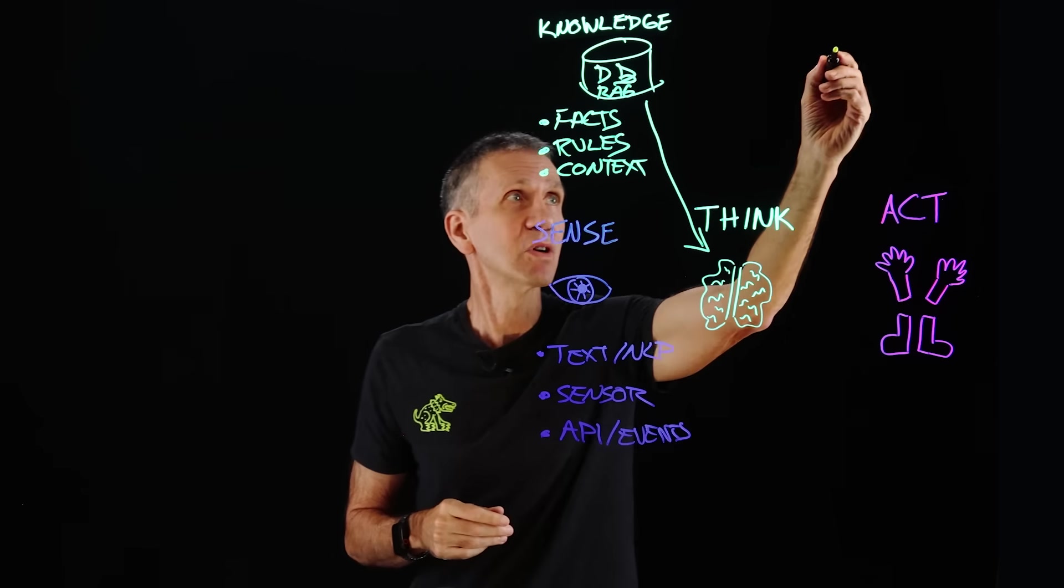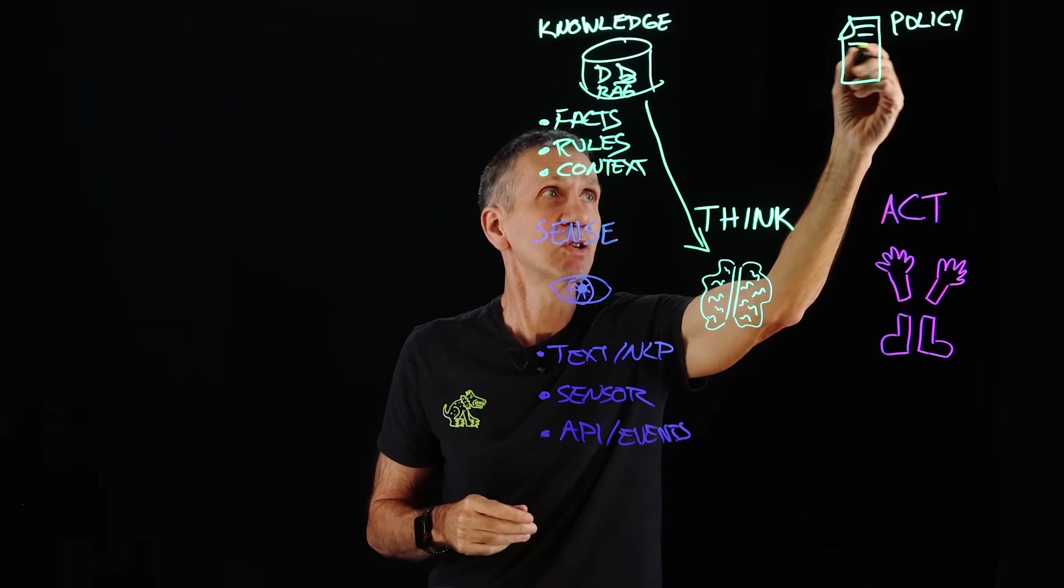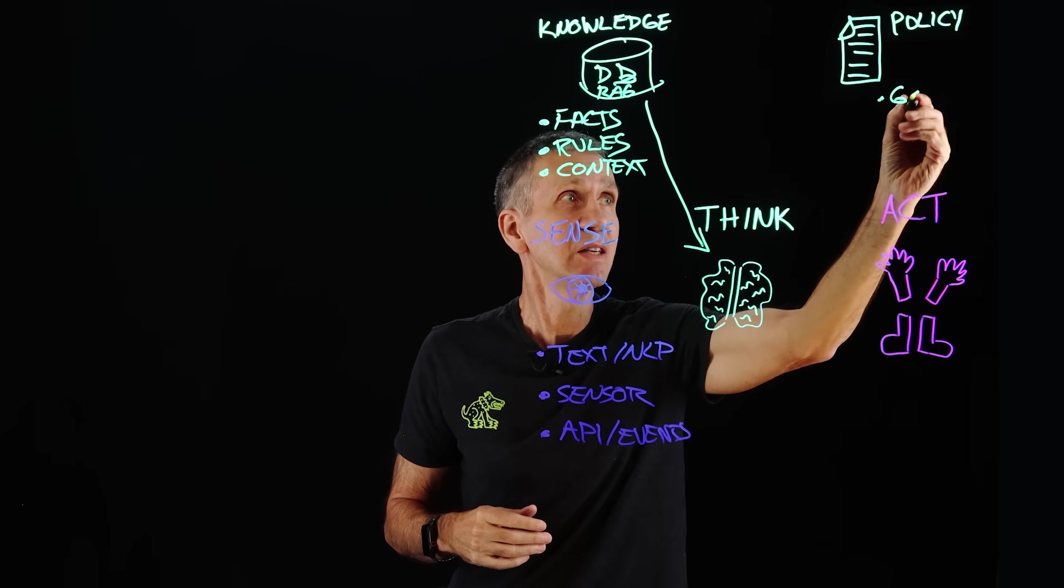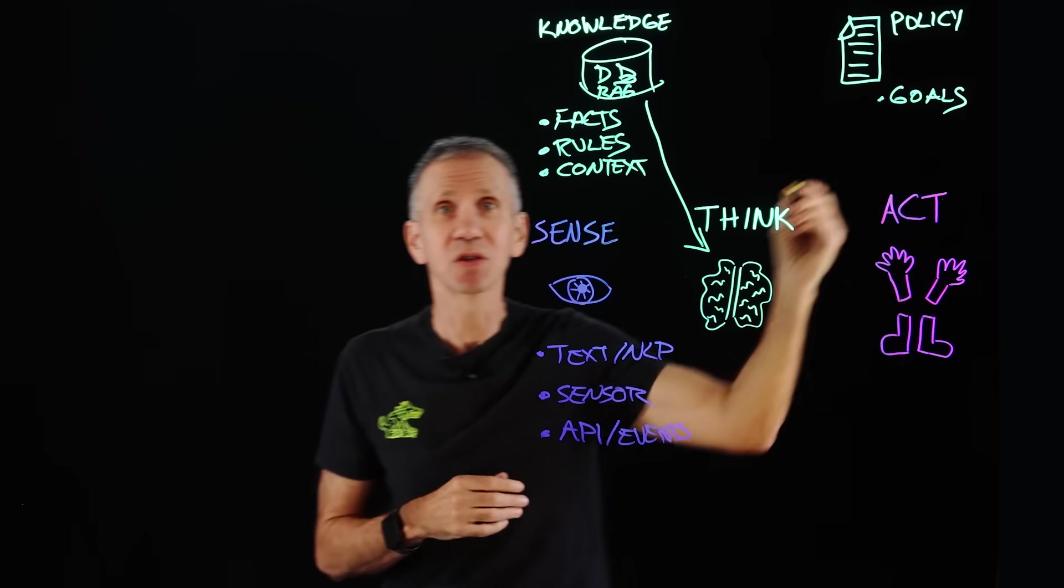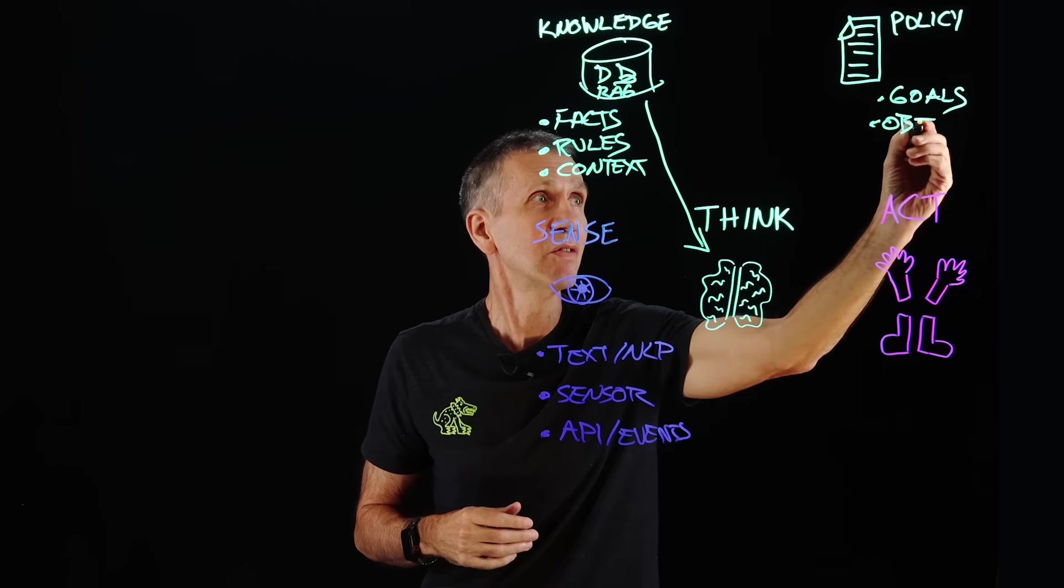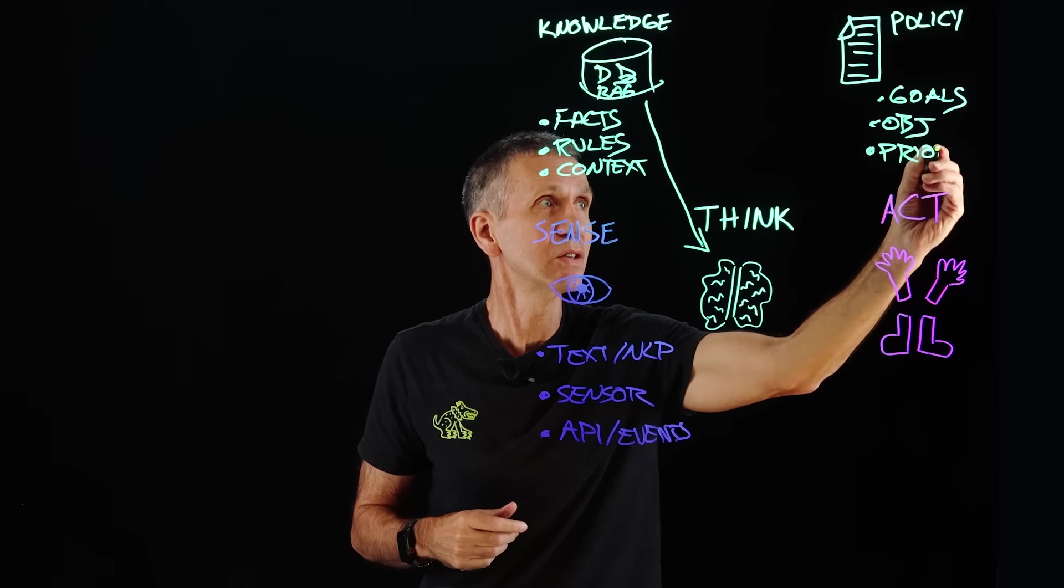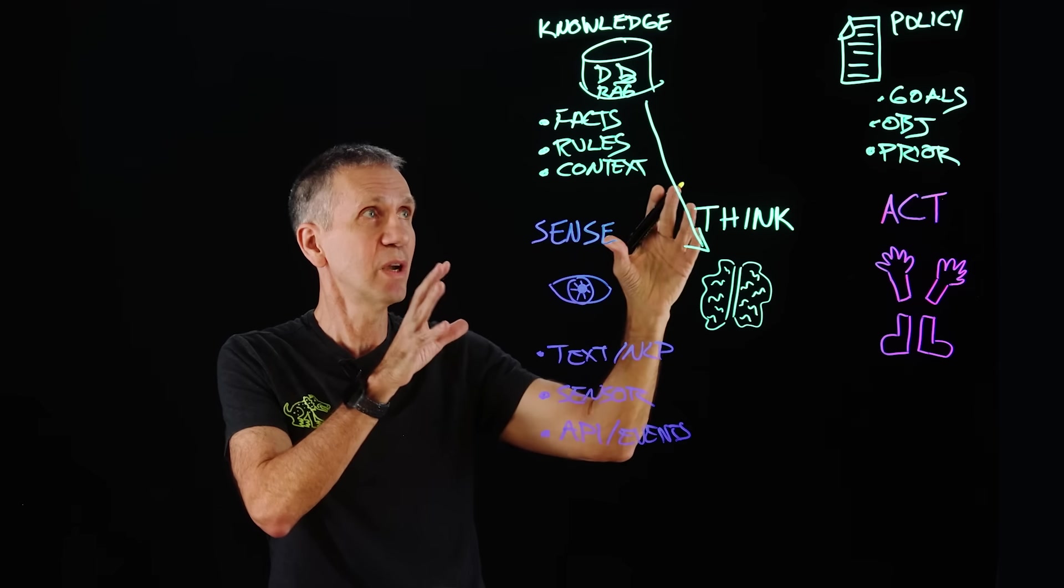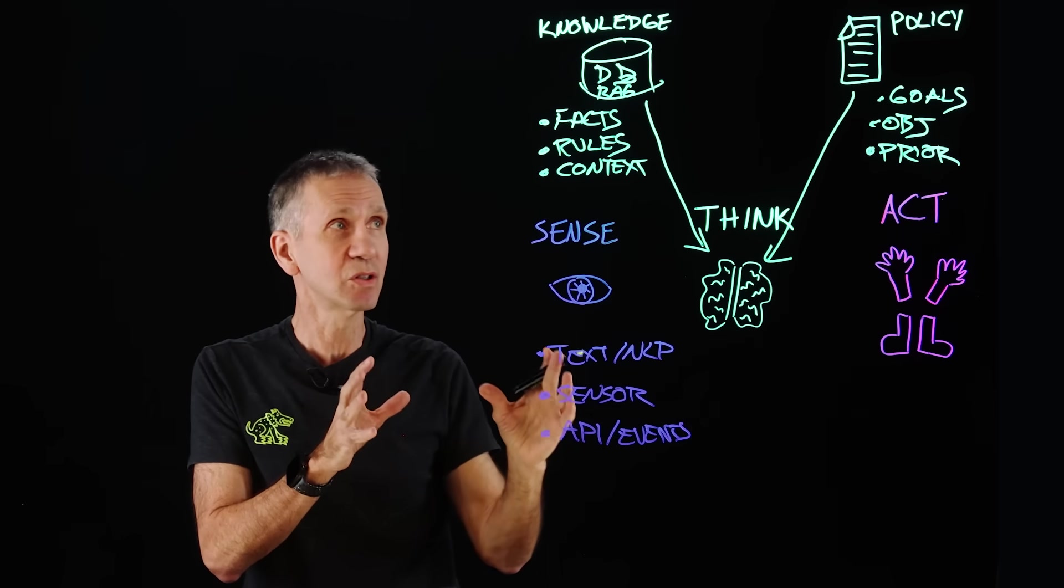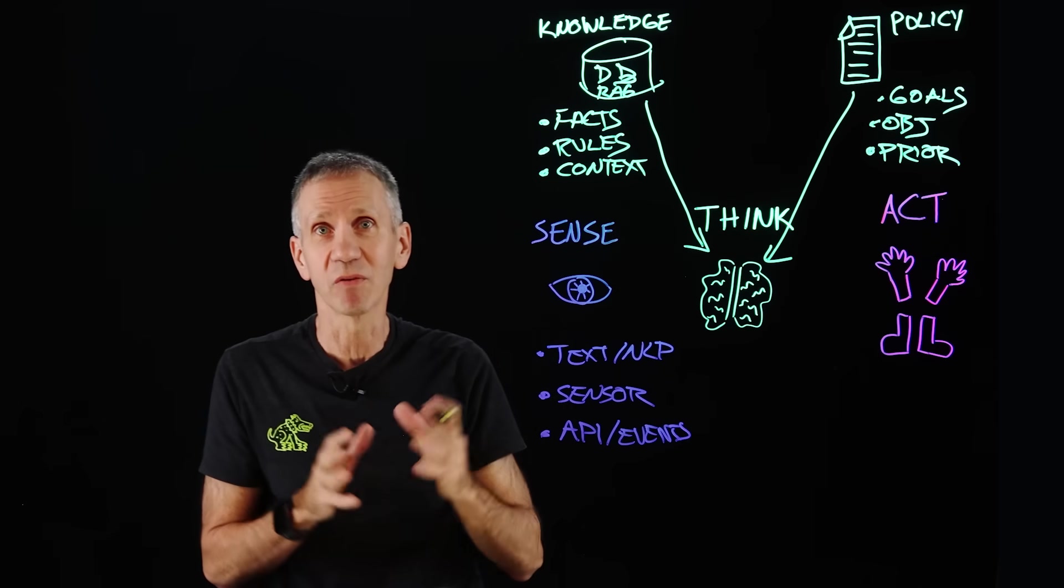Another source we need to consider here is some sort of policy information. We may have a situation where I have goals that I need to consider. What is it I want the system to be able to do, particular objectives and things of that sort. I may have priorities that I need it to consider. All of those things go into the thought process as well. We don't want it to make decisions without considering the facts, the rules, the goals, objectives, the priorities, all of that kind of stuff.